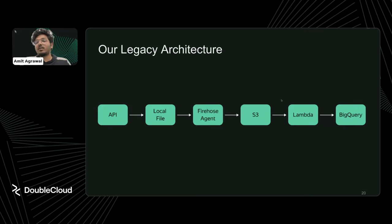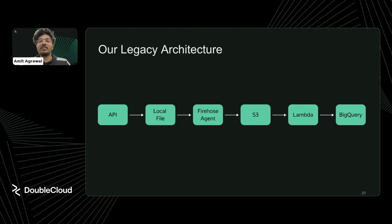All those aggregation steps caused a lot of delay in event sync to BigQuery — Firehose agent forwarded every 5 seconds, Firehose aggregated 1 minute of data before delivering to S3, then Lambda ran every 5 minutes. This delay meant we couldn't solve real-time, in-moment use cases for clients who want to show nudges as soon as a user enters a segment. With so many components, things were breaking at many different points. There was also significant cost inefficiency — BigQuery's query-based pricing meant costs scaled linearly with our data growth, plus cross-cloud data transfer charges from AWS to BigQuery.